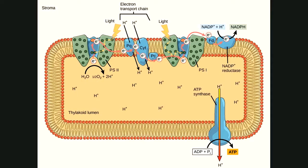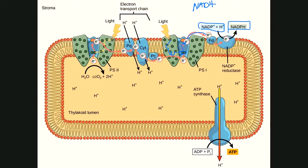Now looking at Photosystem I: sunlight is channeled by the chlorophyll pigments into the reaction center. That energy is transferred to a pair of electrons, which shoot up an energy level. This time, rather than getting passed down an electron transport chain, these electrons are transferred to NADP+, and it becomes NADPH. Like NADH in cellular respiration, NADPH is an electron carrier. Because it carries electrons, it carries reducing power — whoever it drops these electrons off to is going to become reduced.